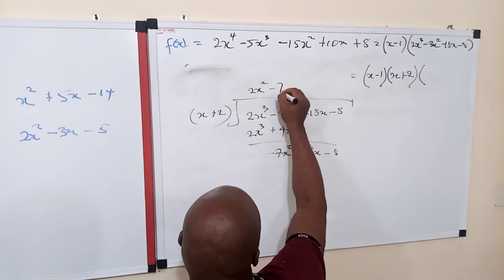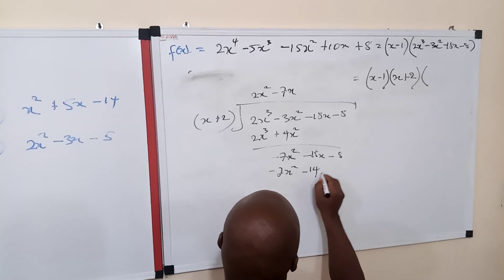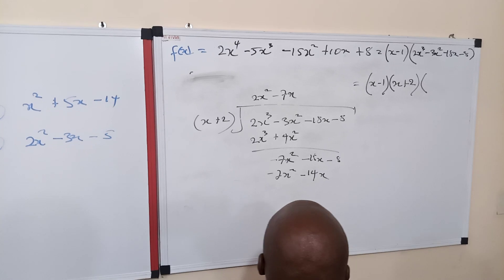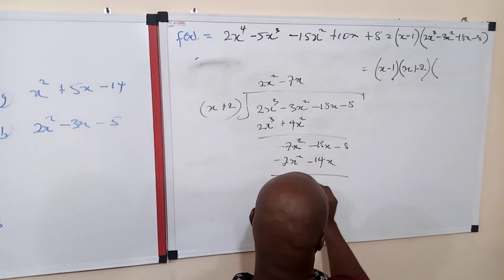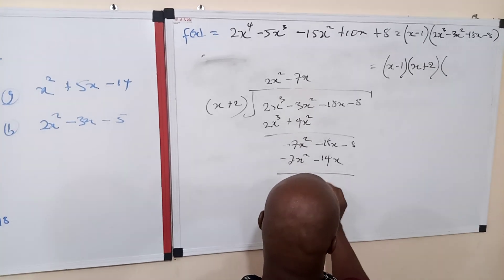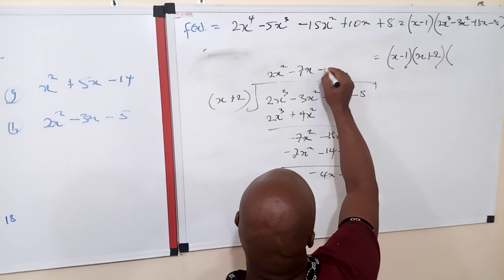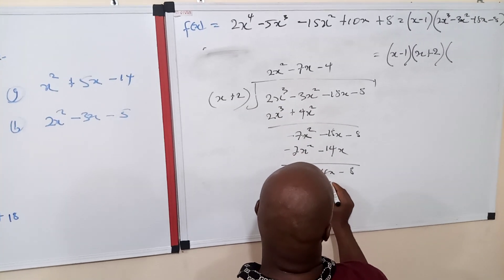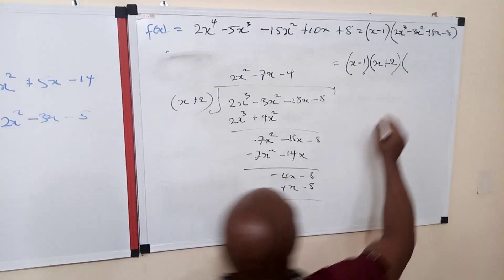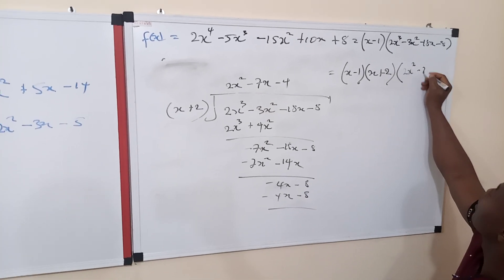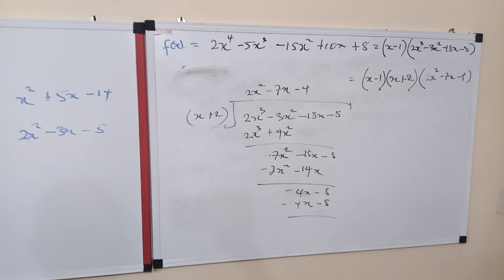The next term is negative 7x. Multiplying x plus 2 by negative 7x gives negative 7x² minus 14x. When you subtract, the negative 7x² terms cancel. This becomes positive, so we have negative 4x, then bring down negative 8. The next term is negative 4. Multiplying gives negative 4x minus 8. When you subtract, everything becomes 0. So the result is 2x² minus 7x minus 4.